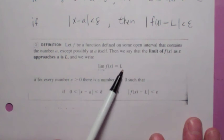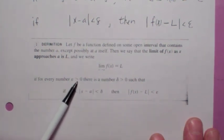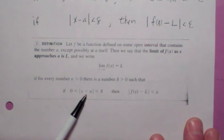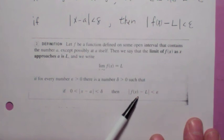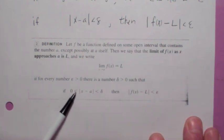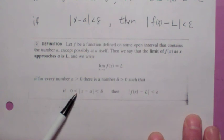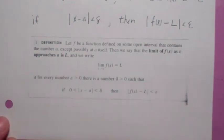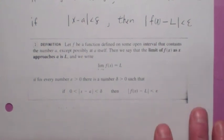The limit as x goes to a of f of x equals L means: for any epsilon greater than zero — that's the allowable error around L on the y-axis — you can find a corresponding radius interval around x equal a on the x-axis, so that if x is within delta units of a, then f of x is within epsilon units of L. The zero less than part just emphasizes that we don't care what happens when x equals a — you may have a hole. On the next video, we're going to look at some examples of this formal definition. See you then.